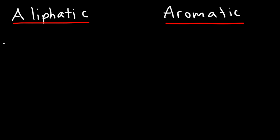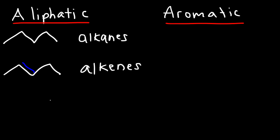Now you have aliphatic hydrocarbons and you also have aromatic hydrocarbons. So what is the difference between the two? Aliphatic hydrocarbons include alkanes, alkenes, which possess carbon-carbon double bonds, and also the alkynes. These are all considered aliphatic hydrocarbons.